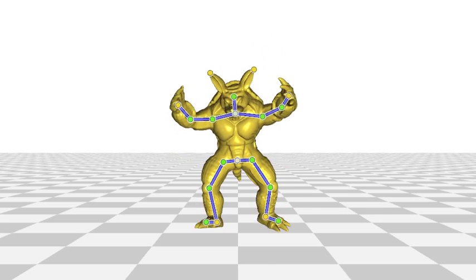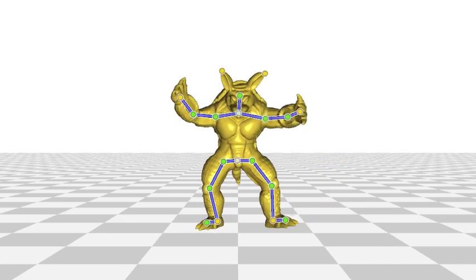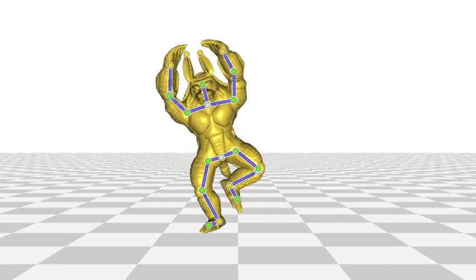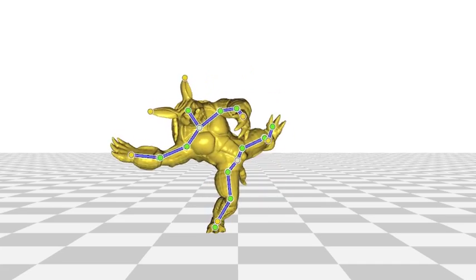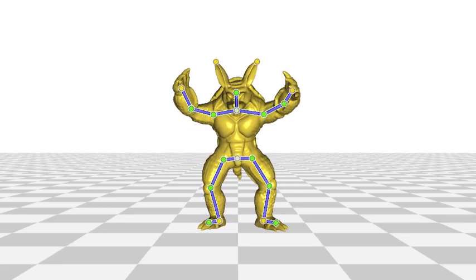Our runtime performance only depends on the linear blend skinning setup and does not depend on the size of the mesh or shape complexity. This allows us to optimize missing degrees of freedom at real-time rates even for complicated meshes.